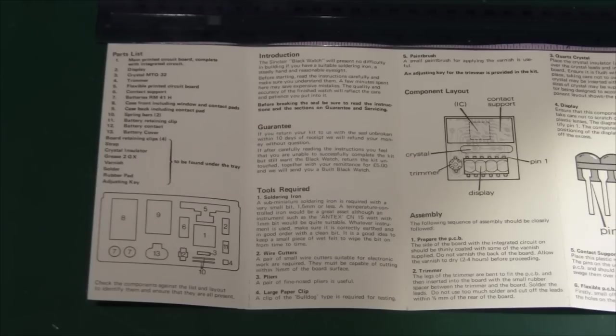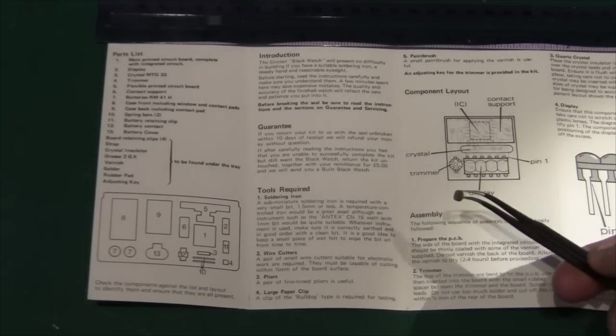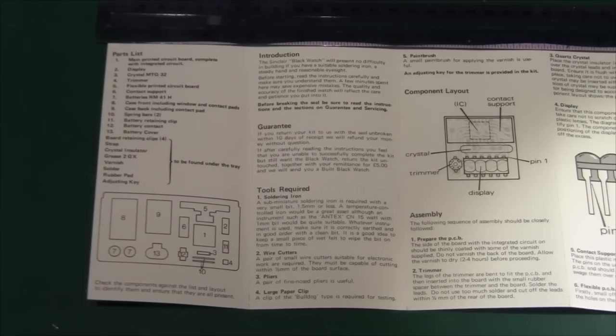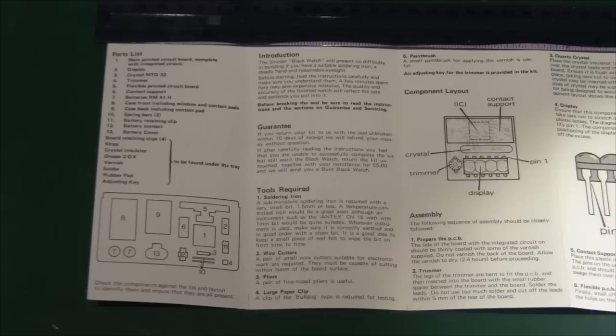Secondly, you have to solder in the little trimmer. And this is a capacitive trimmer. And again, they say you have to be very careful to cut the pins very close to the PCB. Otherwise it won't fit in the board. Next the crystal. The crystal needs a plastic insulator underneath the crystal. Again they must have had some problems with shorts under the crystal to the main PCB because of lacquer and whatever. So yeah, you solder that one in.